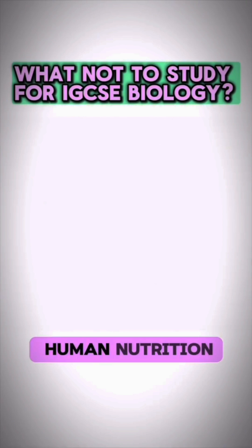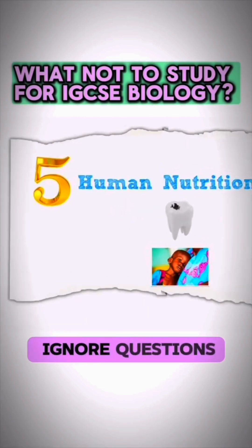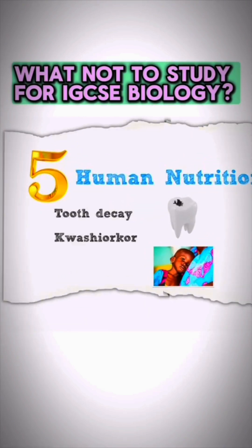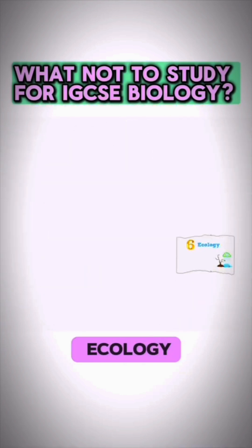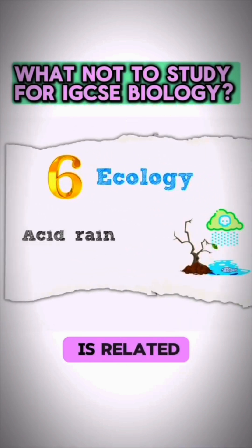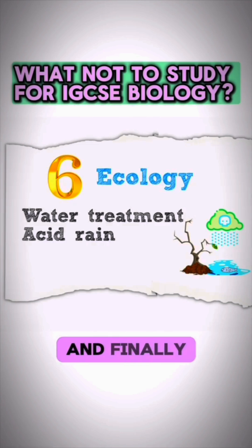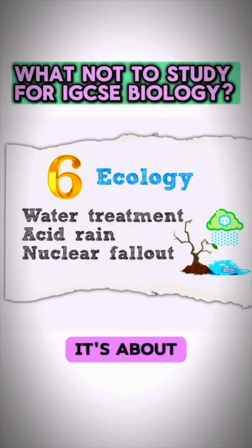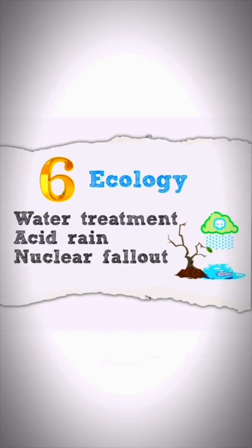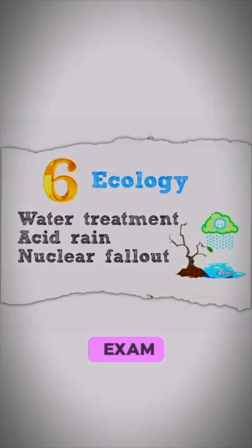Regarding the topic of human nutrition, you should ignore questions related to tooth decay and deficiency diseases such as kwashiorkor and marasmus. Finally, the topic of ecology has three things that have been eliminated: acid rain, water treatment, and nuclear fallout. Make sure you don't solve questions related to these, as they will never come up on your exam.